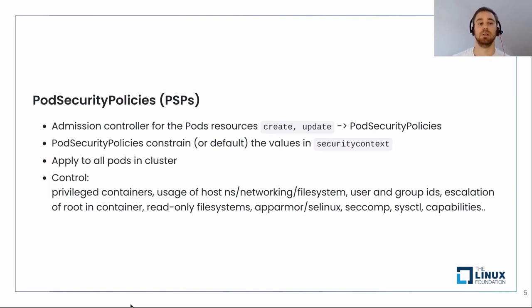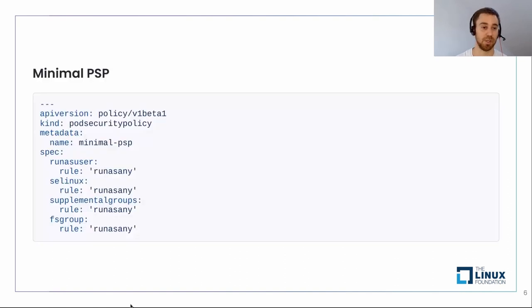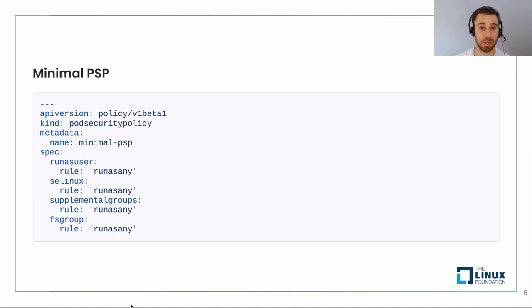PSPs check for all things from the security context: the file system of the container, privileged containers, read-only root file system, AppArmor, Linux capabilities, and similar things. Here we have a minimal PSP — kind PodSecurityPolicy — with minimal spec settings, which in this case does nothing, but gives us an idea of the minimum structure.